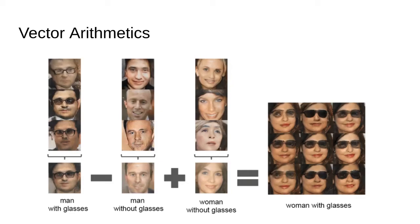The authors have averaged three vector representations of three sample images in three categories. The first category was a man with glasses. The second, a man without glasses. The third, a woman without glasses.